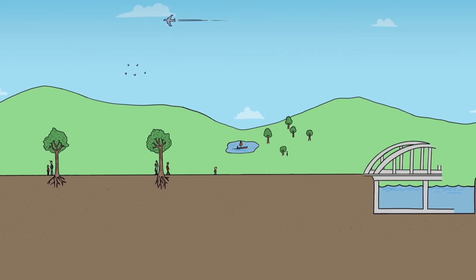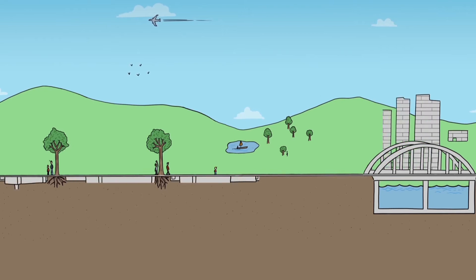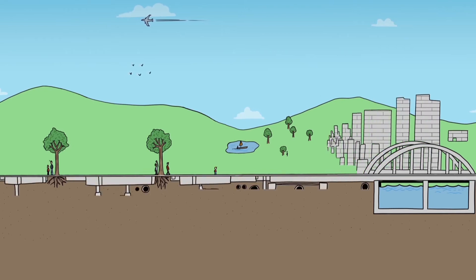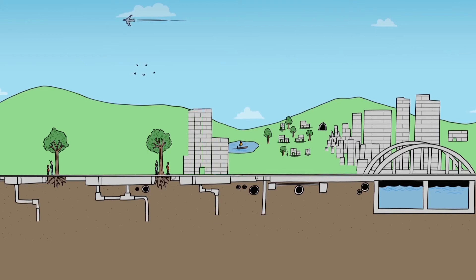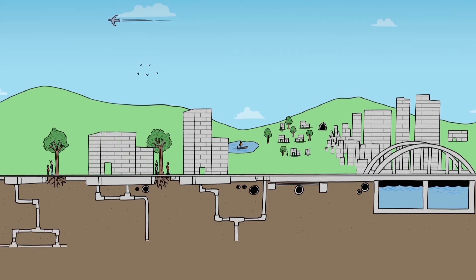Concrete fulfills many of the requirements of the circular economy. It is manufactured from local materials. It is durable. Many of the buildings, bridges, dams and tunnels we use today were constructed decades ago using concrete. That is an efficient use of resources.